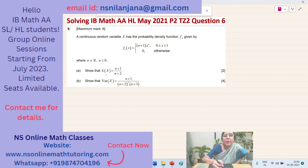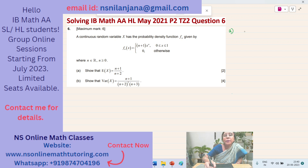Subpart A says: show that the expected value of this continuous random variable x is equal to (n+1) over (n+2), and it contains 2 marks. First of all, let me write the formula for the expected value. You will be getting the formula in the formula booklet. This is the formula for the expected value for a continuous random variable: it is the integral from negative infinity to positive infinity of x times f(x) dx.